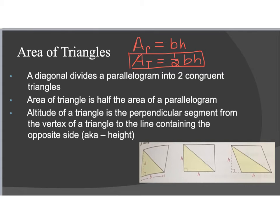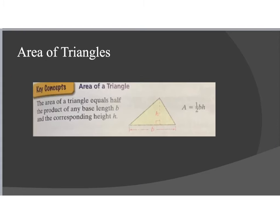The altitude of a triangle is the perpendicular segment from the vertex of a triangle — those corners — down to the line containing the opposite side, and that is what forms the height of our triangle. The area of a triangle equals half the product of any base length and the corresponding height, or in equation form: area equals one half base times height. This is one of those formulas that I highly suggest you memorize.